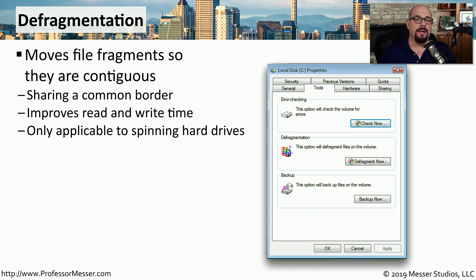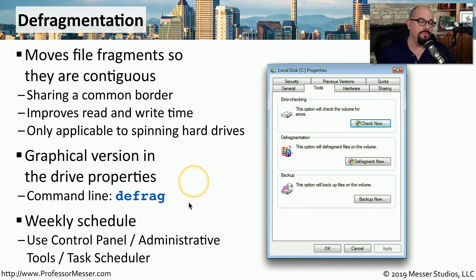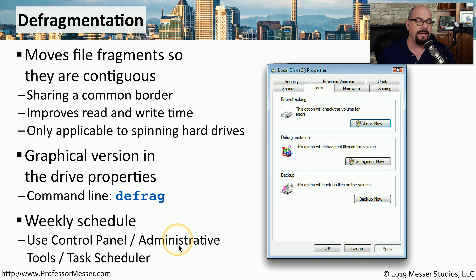Windows includes a defragmentation utility that can take all of those separate pieces of files and put them into a contiguous area. You'll find that in the drive properties under the defragmentation option, and there's an option there to defragment now. You can also start this same process from the command line by typing in defrag. In newer versions of Windows, the defragmentation process has already been added to the weekly schedule, found under Control Panel, Administrative Tools, and Task Scheduler.